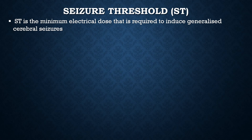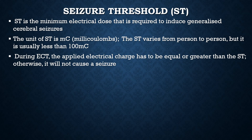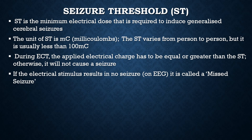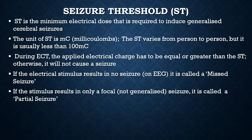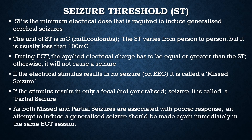The seizure threshold is the minimum electrical dose required to induce generalized cerebral seizures. The unit is millicoulombs and it is usually less than 100 millicoulombs, though it varies from person to person. The applied electrical charge must equal or exceed the seizure threshold; otherwise, it will not cause a seizure. If the stimulus results in no seizure on EEG, it is called a missed seizure. If it results in only a focal seizure, it is called a partial seizure. Both missed and partial seizures are associated with poorer response, so an attempt to induce a generalized seizure should be made again immediately in the same session.